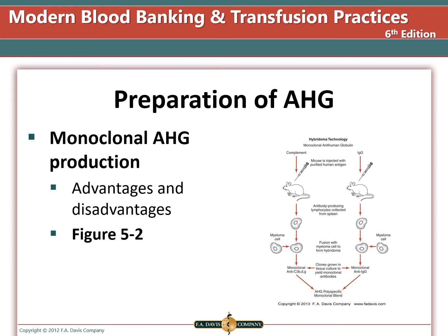Monoclonal production is from hybridoma technology. The animal is injected, the spleen is removed, and the cells isolated. The cells are fused to a myeloma cell, and then these cells can reproduce and produce antibodies endlessly. Once an antibody-secreting clone of cells has been established, antibody with the same specificity and reaction characteristics will be available almost indefinitely. This allows the production of a consistent, pure, and uncontaminated AHG reagent. The disadvantage is that it is very specific and may need to be blended with other monoclonal antibodies since some people will not produce all epitopes.